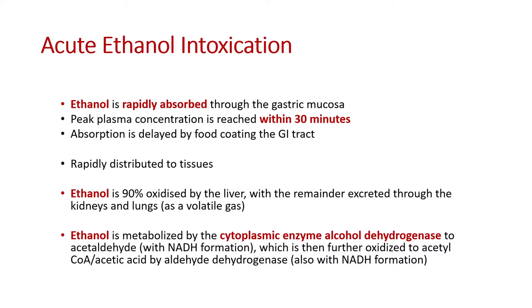Absorption is delayed by food coating the GI tract. Once absorbed, alcohol is rapidly distributed to tissues — 90% is oxidized by the liver and the remainder excreted through the kidneys and lungs as a gas, which is why you can smell alcohol on people's breath. Ethanol is not metabolized by cytochrome P450 — it's metabolized by cytoplasmic enzyme alcohol dehydrogenase, converting ethanol into acetaldehyde with some NADH, then oxidized into acetyl CoA with acetic acid, and excreted.